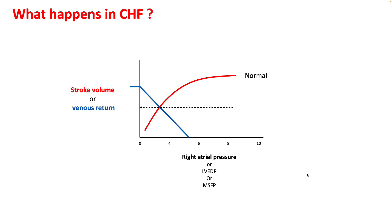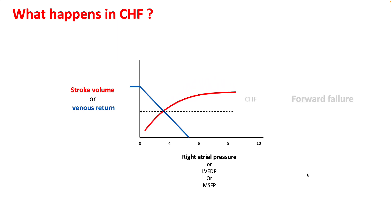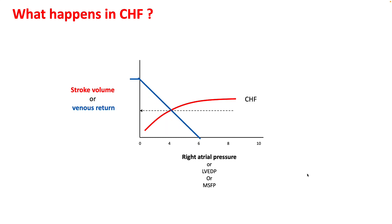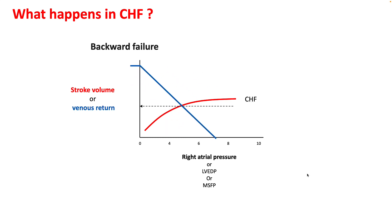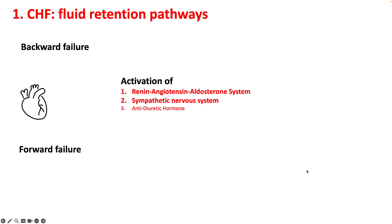The red line shows the stroke volume and the blue line shows the venous return, and the point of contact is your stroke volume at a given venous return. In heart failure, as your Frank-Starling curve gets depressed, your stroke volume for a given venous return decreases, and your body has to retain salt and water to improve the venous return and get back to its original stroke volume.